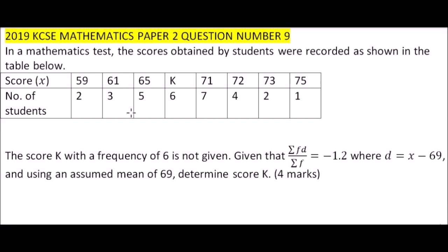The score K with a frequency of 6 is not given, so we have K there. Given that the summation of fd over summation of f equals minus 1.2, where d equals x minus 69, and using an assumed mean of 69, determine the score K. So this is assumed mean, we have covered this.